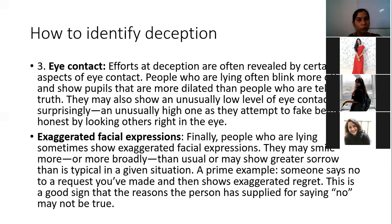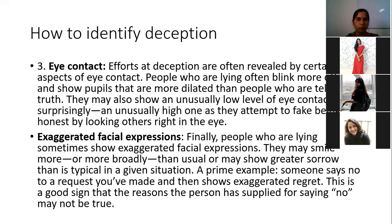Whether someone looks away or maintains intense eye contact depends on the individual's personality and how they want to express it. If you really know the person, you'll get to know whether any deception is happening. Identifying deception is very easy with your own family members, close friends, and the circle you interact with on an everyday basis. With strangers it is a little more difficult, but with keen attention and experience it is possible.